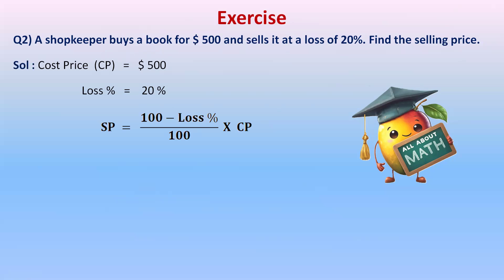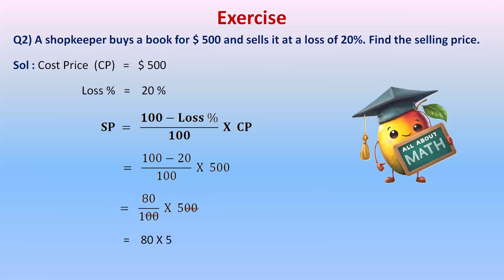Selling Price = (100 - 20) / 100 × 500 = 80 / 100 × 500. Cancelling zeros: 80 × 5 = 400. Therefore, the selling price of the book is 400 dollars. Remember: addition or subtraction is done in the numerator when finding the selling price.